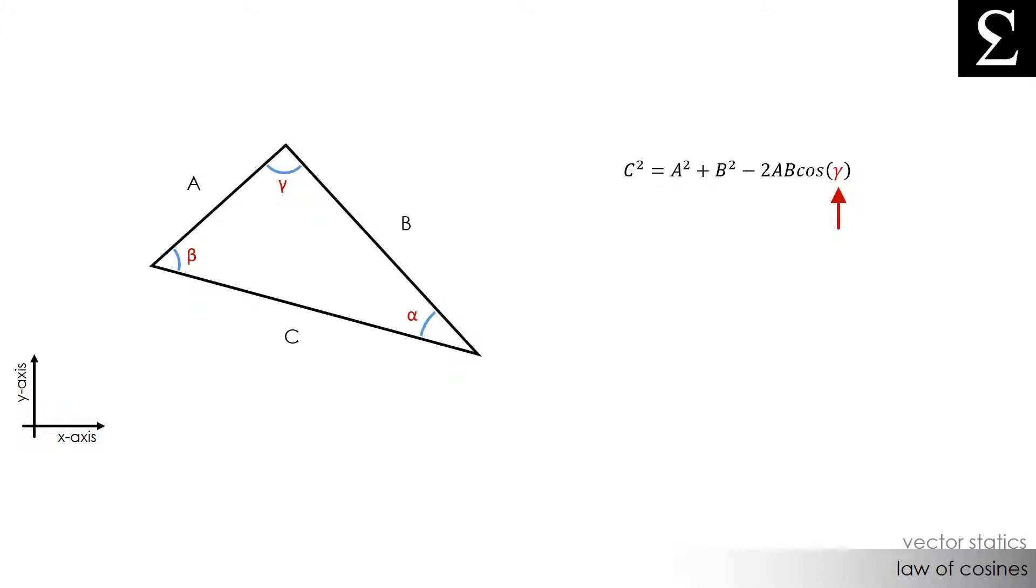Now the angle within the cosine here will always correspond to the side on the left side of the equation, which in this case is side c. The sides a and b will always be the sides that form the angle used in the equation, which in this case is gamma.